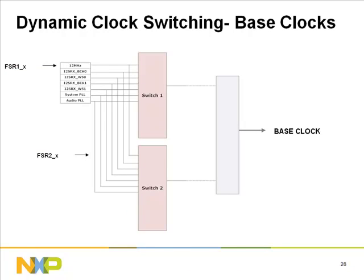Dynamic clock switching: each base clock is provided with two switches. Frequency select registers enable selection of the input clock source. Care must be taken when switching to and from very low speed clocks as there may be significant delay. The SSR register can be used by software to wait for a clock switch to complete. All frequency select registers reset to zero, making the 12 MHz clock the default source.